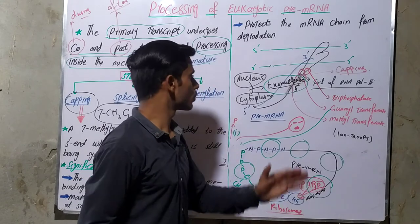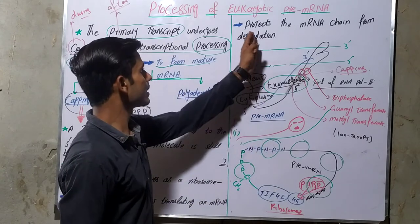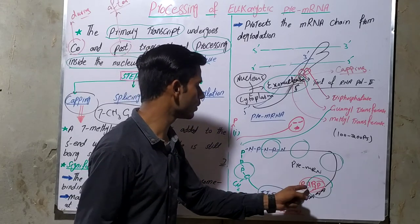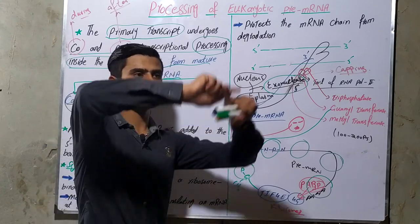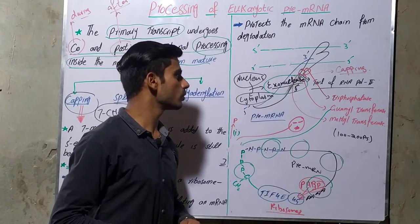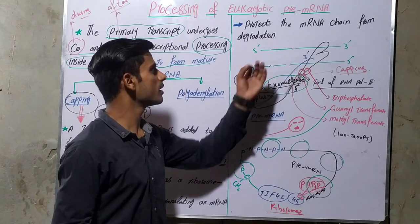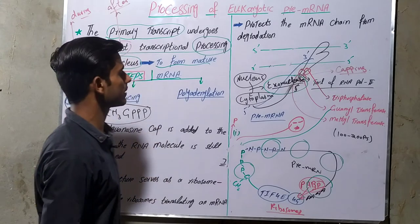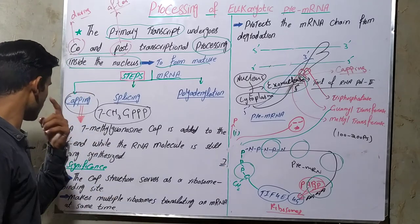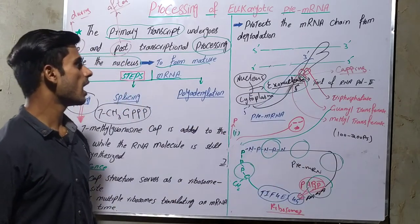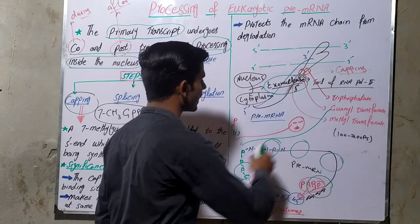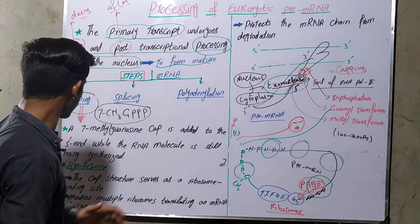When there is no terminal end, exonuclease is unable to cut the nucleotides, so it will not act on the circular messenger RNA. This degradation is prevented because the cap binds with the translation initiation factors, then the poly-A binding proteins bind with those factors, causing the messenger RNA to form a circle. Because it is in the form of a circle with no terminal end, exonuclease cannot attack it and degradation is protected.